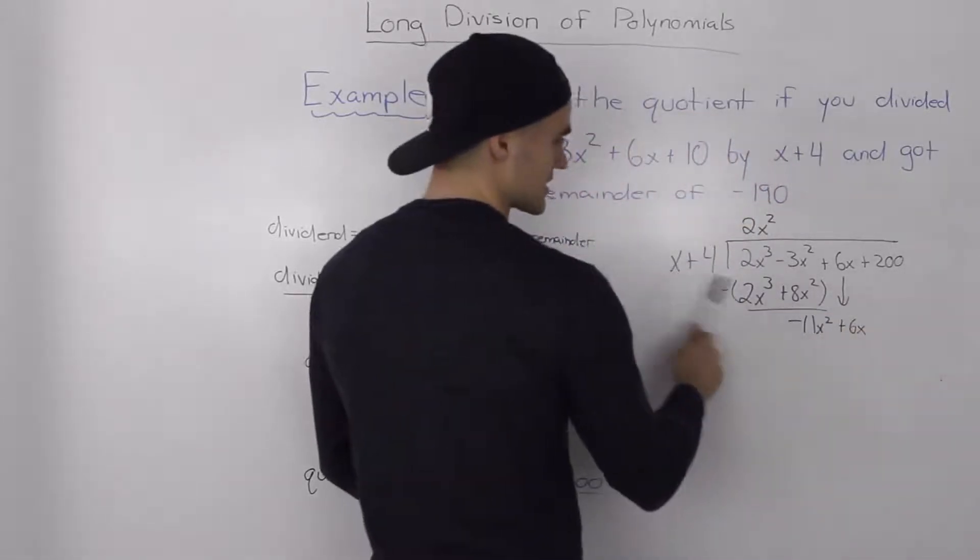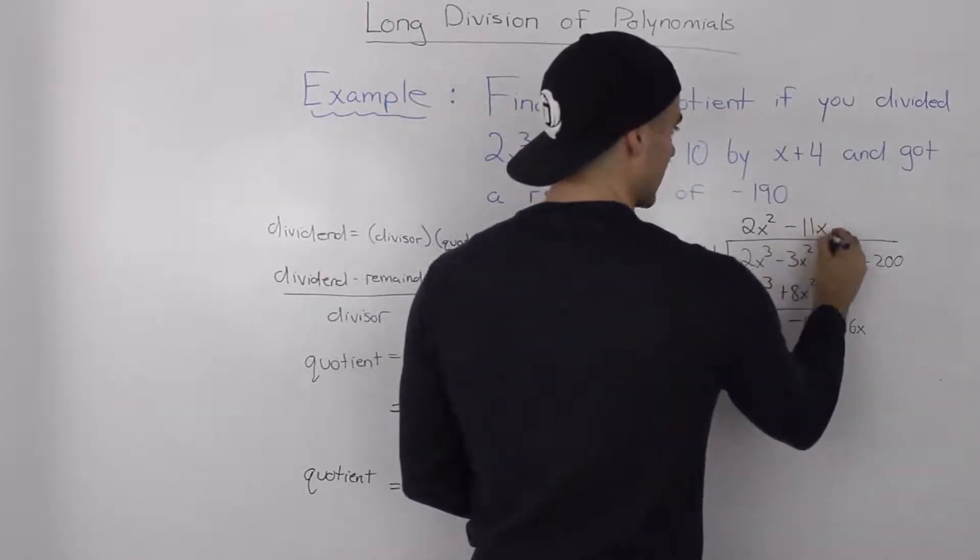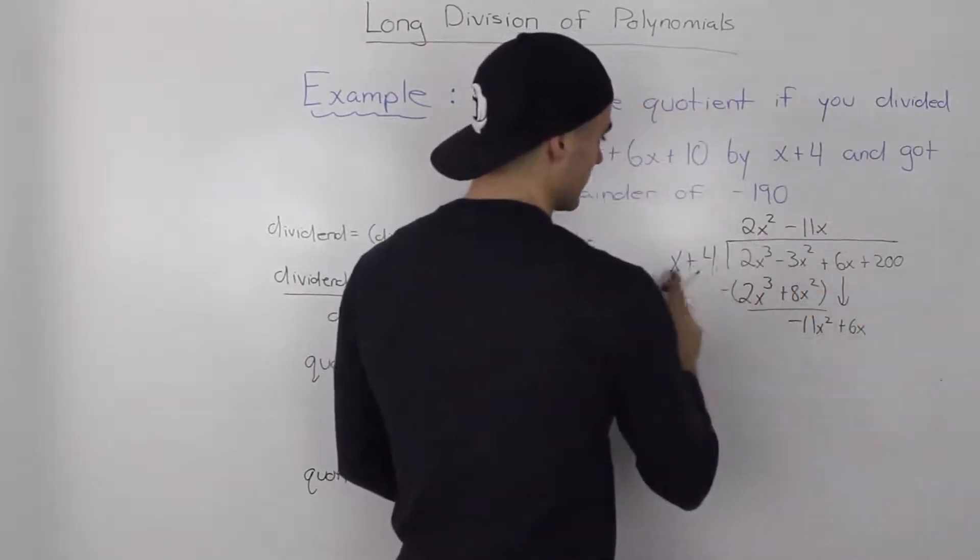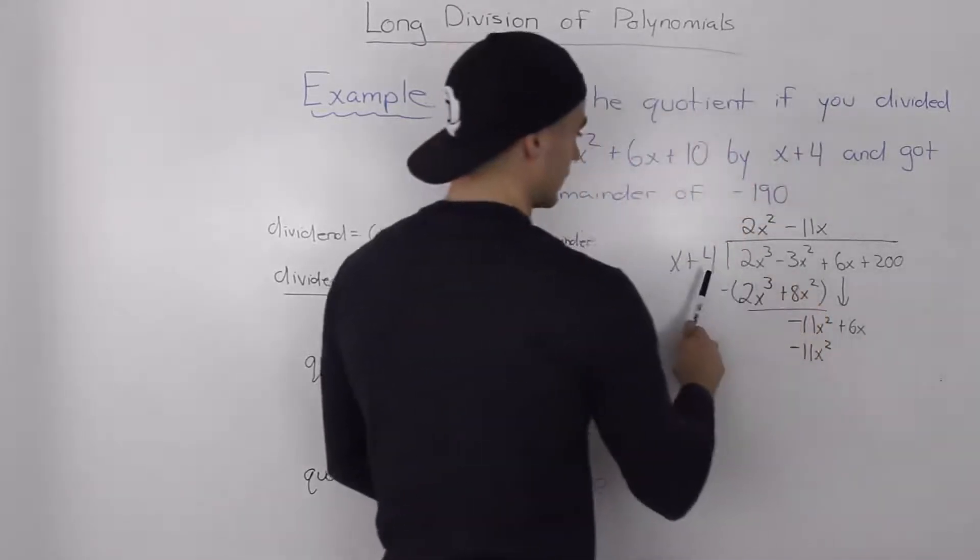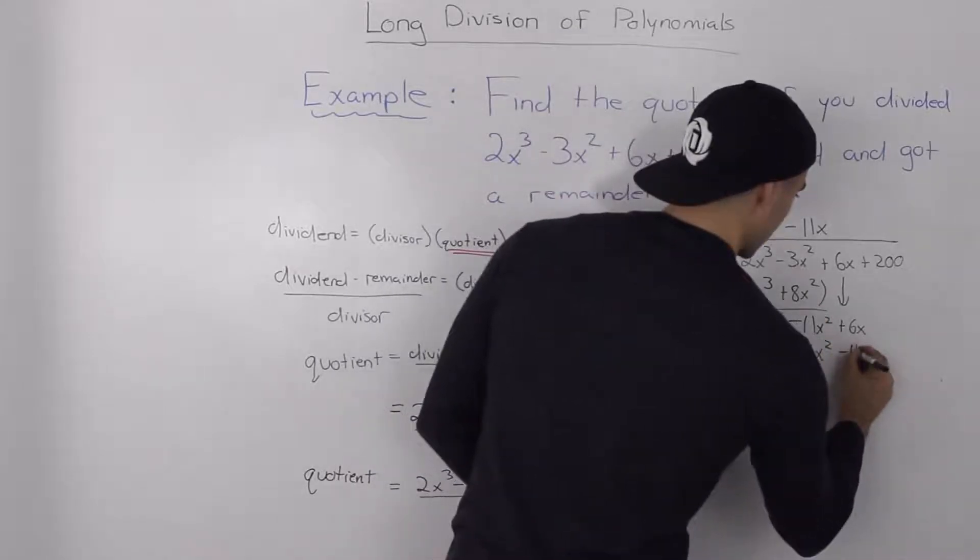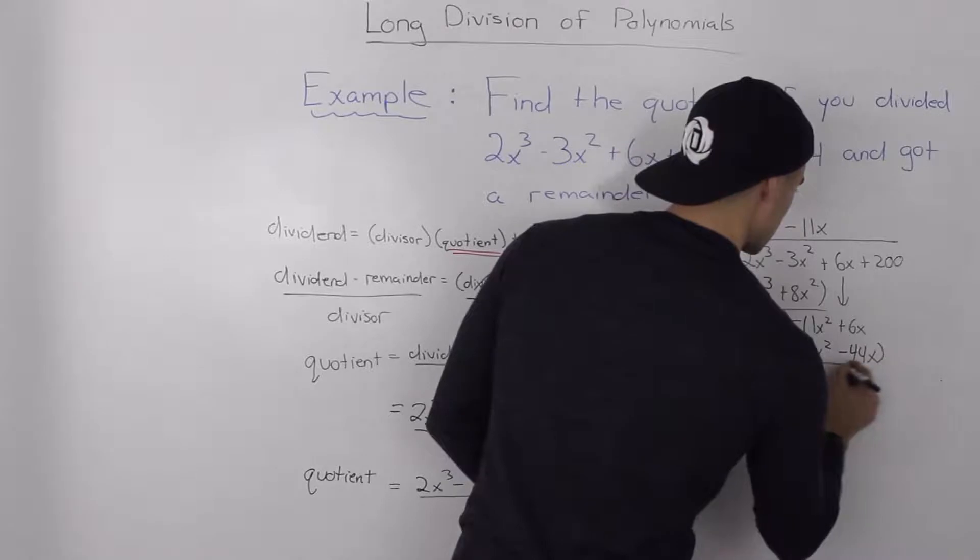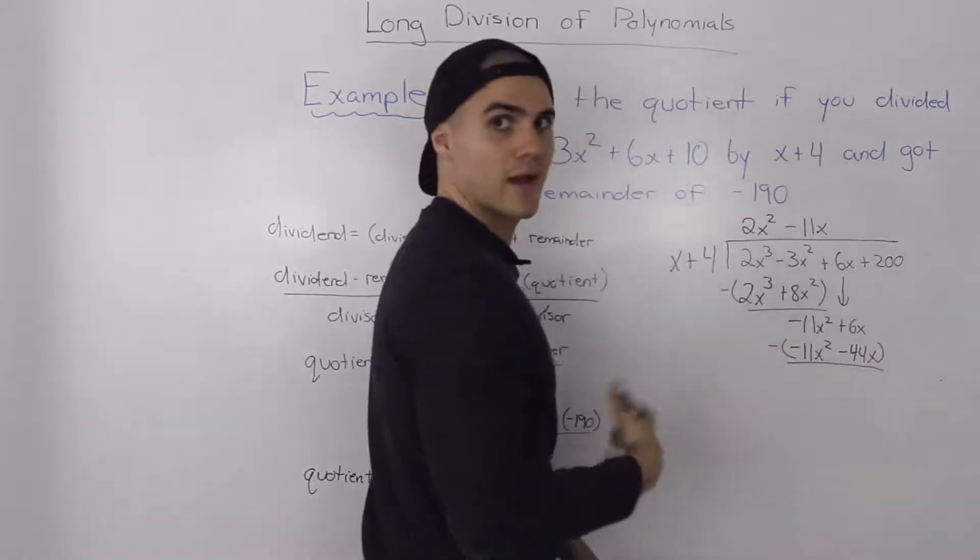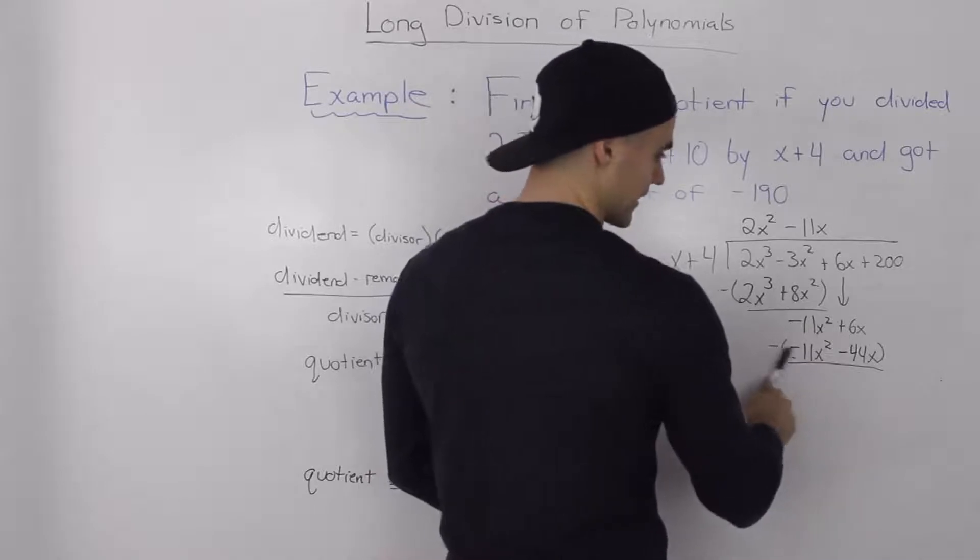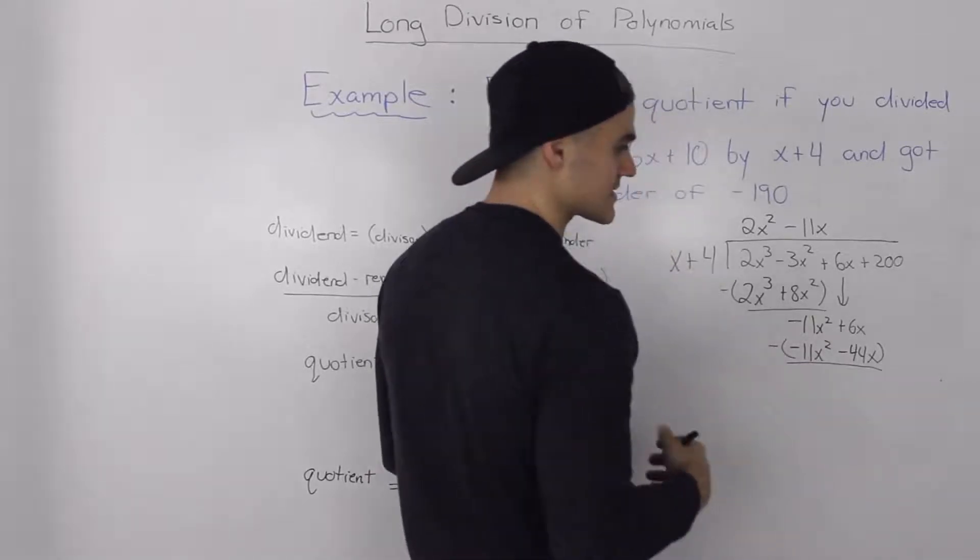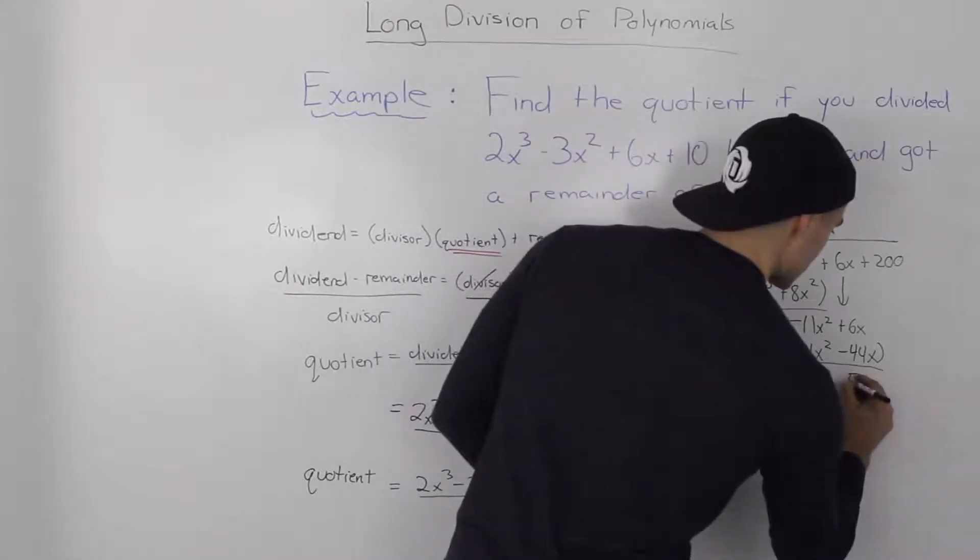How many times does x go into -11x²? Well it just goes in -11x times. Then -11x times x gives us -11x², -11x times 4 gives us -44x. Then when we minus these, -11x² minus -11x² nets out to 0, 6x minus -44x is the same as 6x + 44x, which would give us 50x.